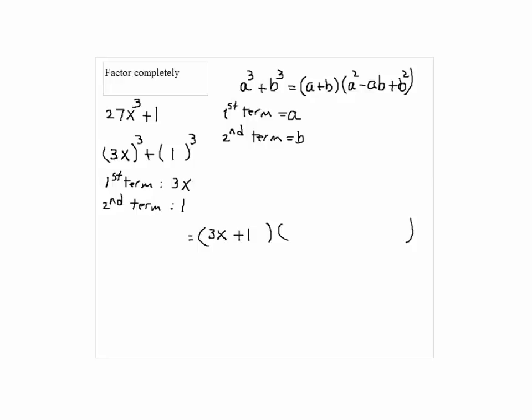So our first term is 3x. Our second term is 1. If I place that into the formula, we get A cubed plus B cubed is equal to A plus B. My first term is 3x plus B. The second term would be 1.